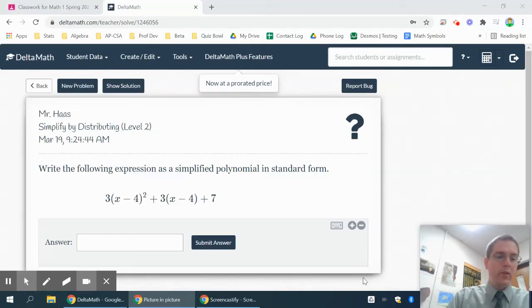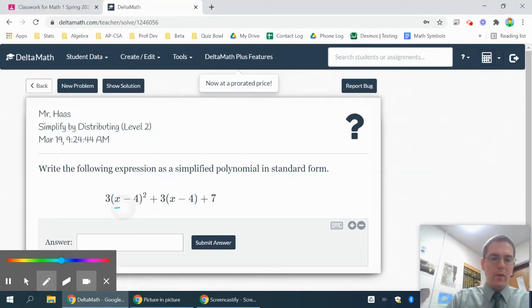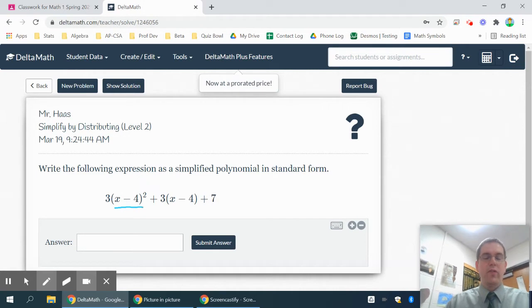Okay, this problem here, we're going to simplify it, but the first thing we're going to have to do is take care of order of operations. It says do parentheses with exponents first, so that means I'm going to have to go over here and multiply x minus 4 times x minus 4.